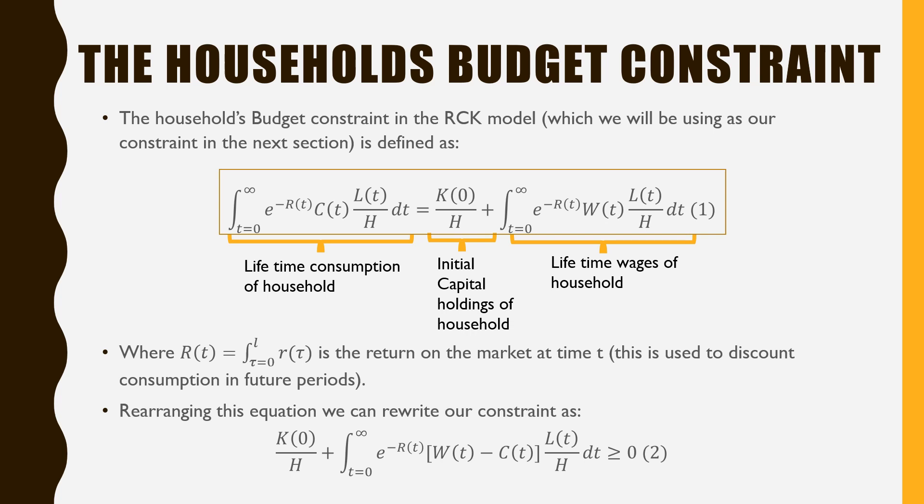The household's budget constraint in the RCK model, which we'll be using in the next section, is defined as: our lifetime household consumption equals the initial capital holdings of each household, K(0)/H, plus the lifetime wages of the households, denoted by these integrals. Where R(t), which is our discount factor, is the integral from tau equals zero to t, and this is the return on the market at time t. This is used to discount consumption in future periods.